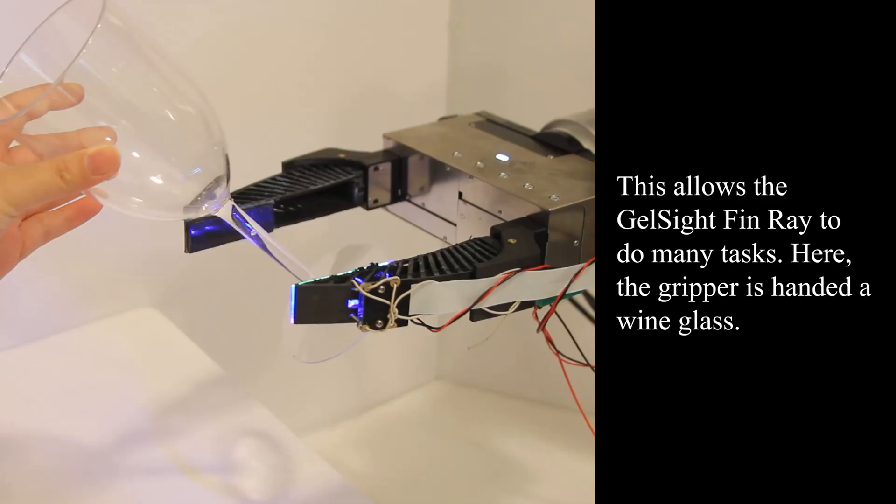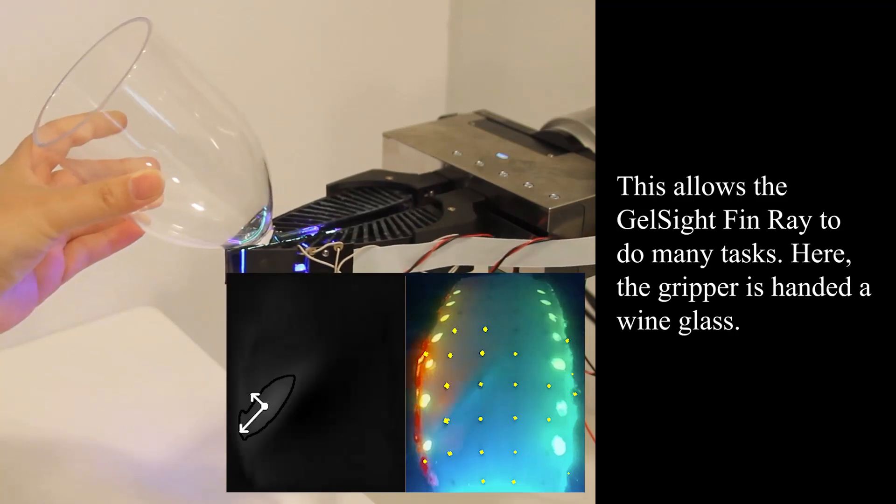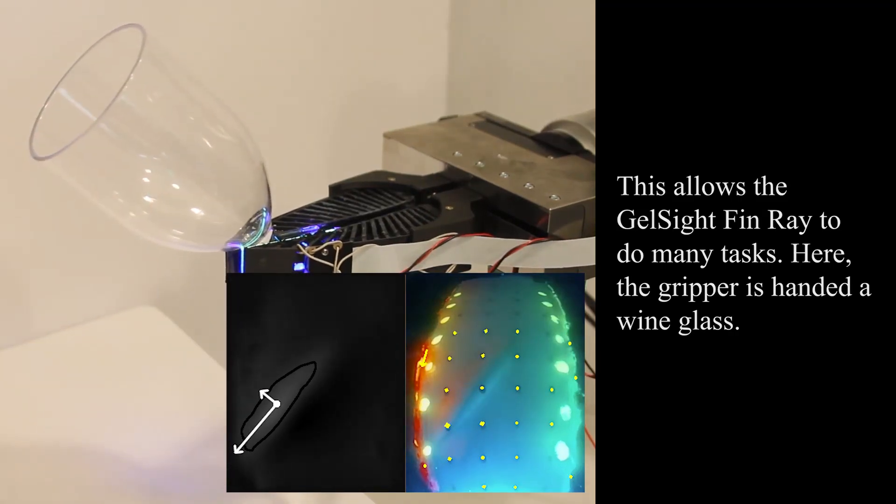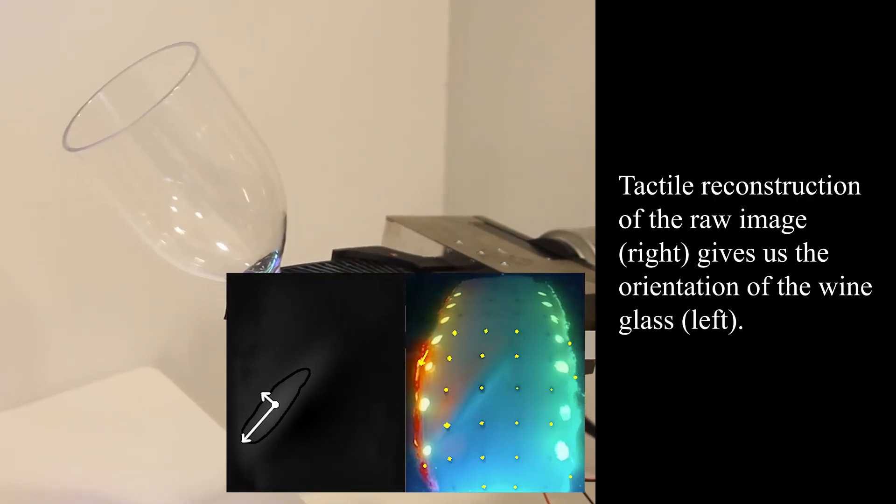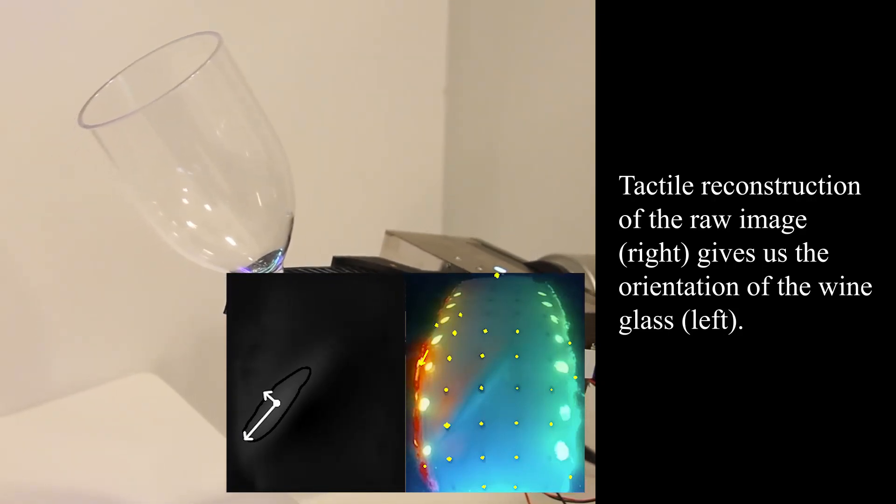This allows the GelSight FinRay to do many tasks. Here, the gripper is handed a wine glass. Tactile reconstruction of the raw image on the right gives us the orientation of the wine glass on the left.